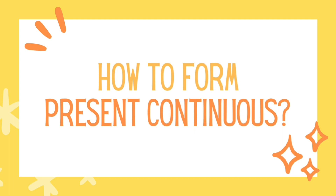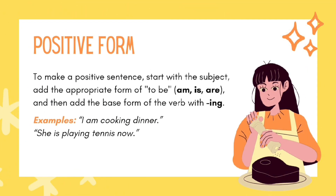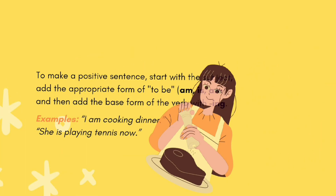How to form present continuous tense? Positive form: To make a positive sentence, start with the subject and add the appropriate form of to be — am, is, are — and then add the base form of the verb with -ing. Example: I am cooking dinner. She is playing tennis now.